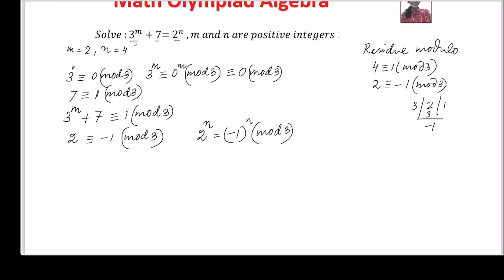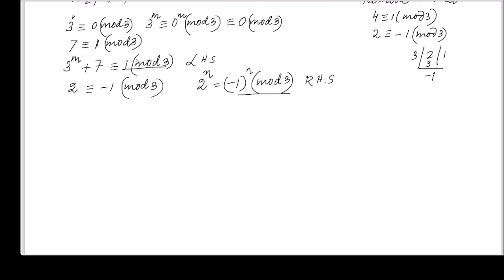Since the left-hand side and right-hand side are equal in the given equation, the left-hand side is equivalent to 1 modulo 3, and the right-hand side is negative 1 raised to the power n modulo 3. For these to be equal, negative 1 to the power n must equal positive 1, which means that n is an even number.